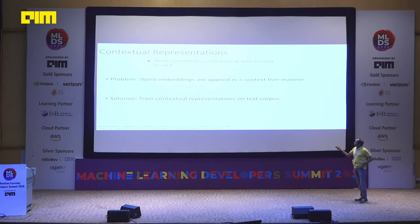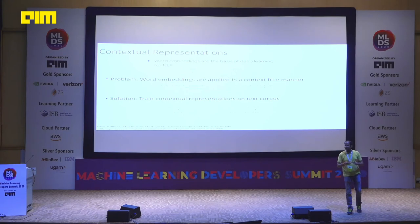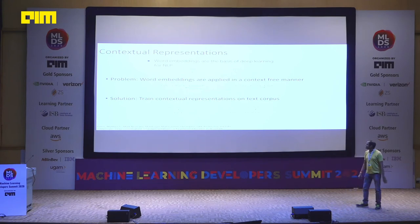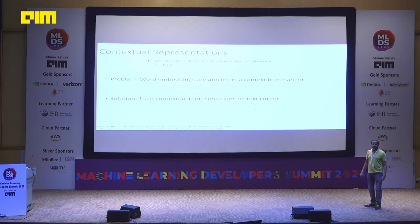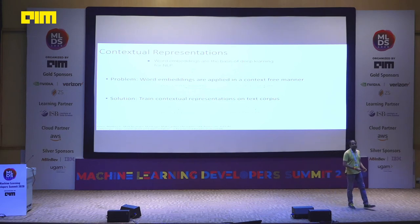Neural networks work on numbers, so people came up with embeddings — vector representations, numeric arrays for every word. This led to Word2Vec, where words like 'king' and 'queen' get numeric vectors. The famous example: king minus man plus woman equals queen. Word2Vec nicely captures such relationships. But the problem is that natural language has intricacies Word2Vec can't capture.